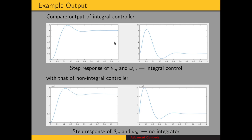On this slide we have the output of the integral controller. Plotting X1 and X2 — the angular position and angular velocity of the motor shaft — we can see the steady state value is 1. We still have about 20% overshoot and a settling time of 0.55. So we maintained our transient response and eliminated the steady state error. The original controller had steady state error of 0.9986, whereas now the step response with the integral controller reaches 1.